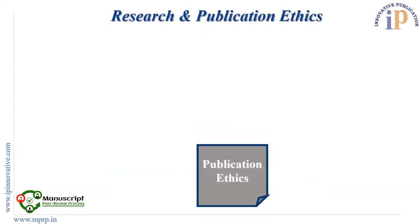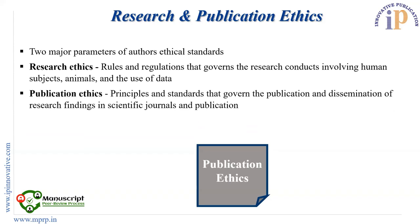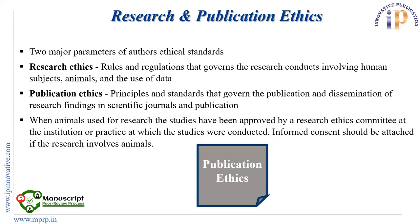Last but not least, research and publication ethics. Two major parameters of author ethical standards are research and publication ethics. Research ethics can be defined as the rules and regulations that govern research conducts involving human subjects, animals, and the use of data. Publication ethics can be defined as the principles and standards that govern the publication and dissemination of research findings in scientific journals. When animals are used for research, studies must be approved by a research ethics committee at the institution or practice where studies were conducted. Informed consent should be attached if the research involves animals.